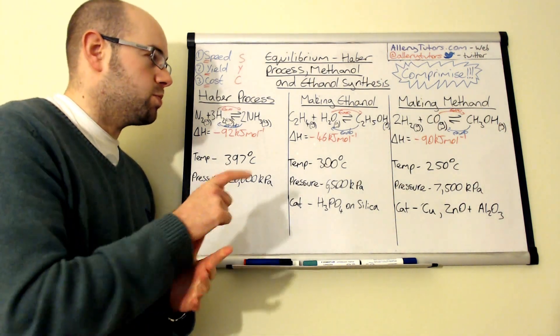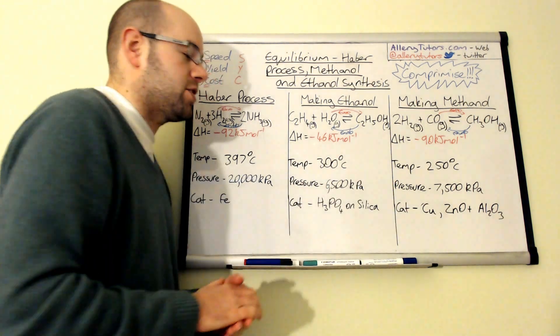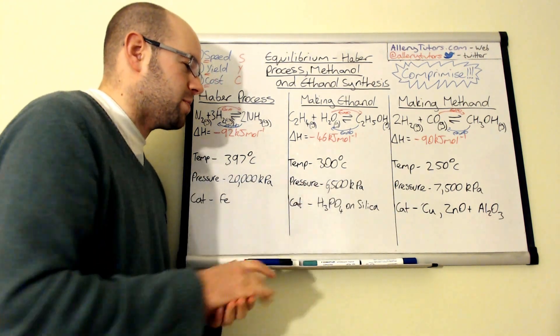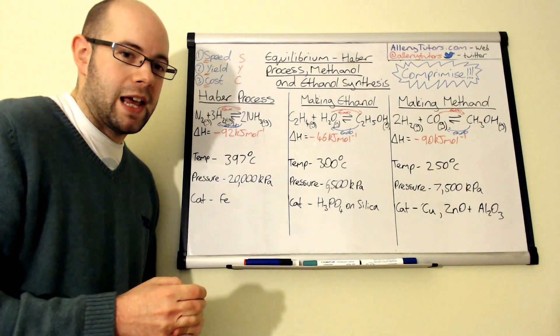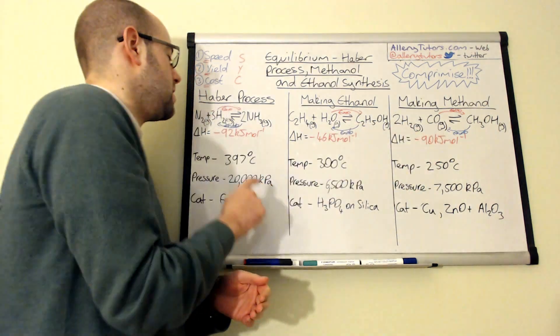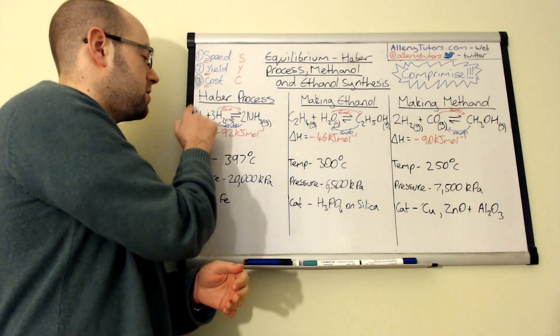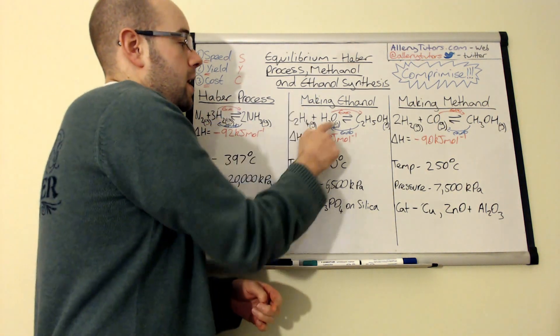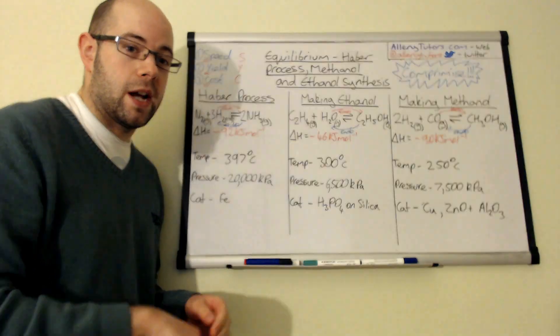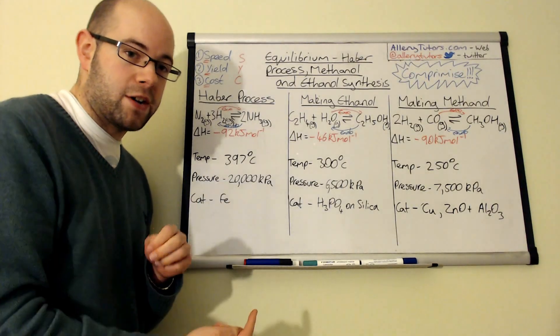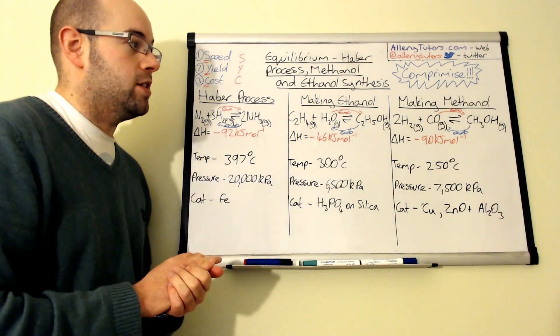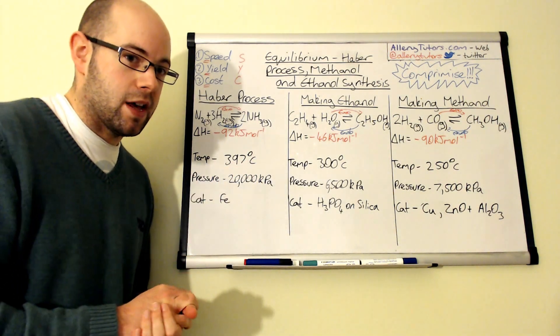Just one final thing: a lot of these reactions are actually really poor yields, only averaging about 15% maybe even less, 20% first time around. So actually with a lot of these reactions here, the reactants—in this case nitrogen and hydrogen, ethene and steam, hydrogen and carbon monoxide—can be recycled, brought back around and re-reacted.